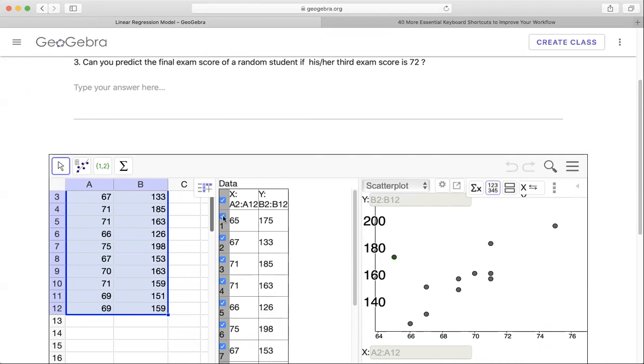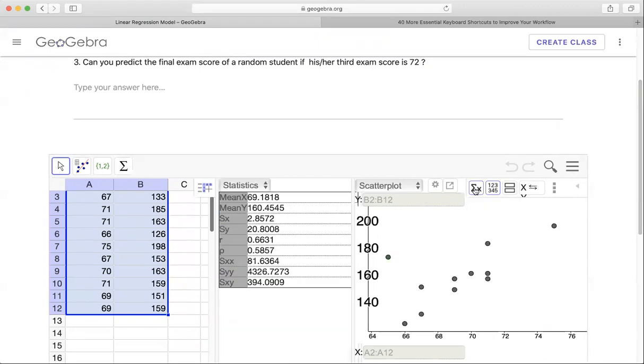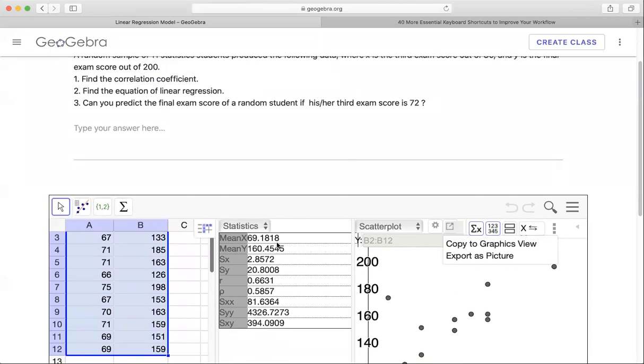Now we need to find regression line. So you're going to click on this symbol right here. It's going to show you all the data you have right here. The mean of all the x values, the mean of all the y values, standard deviation of x value, standard deviation of y value. And this here, r, that's where you find the correlation coefficient.